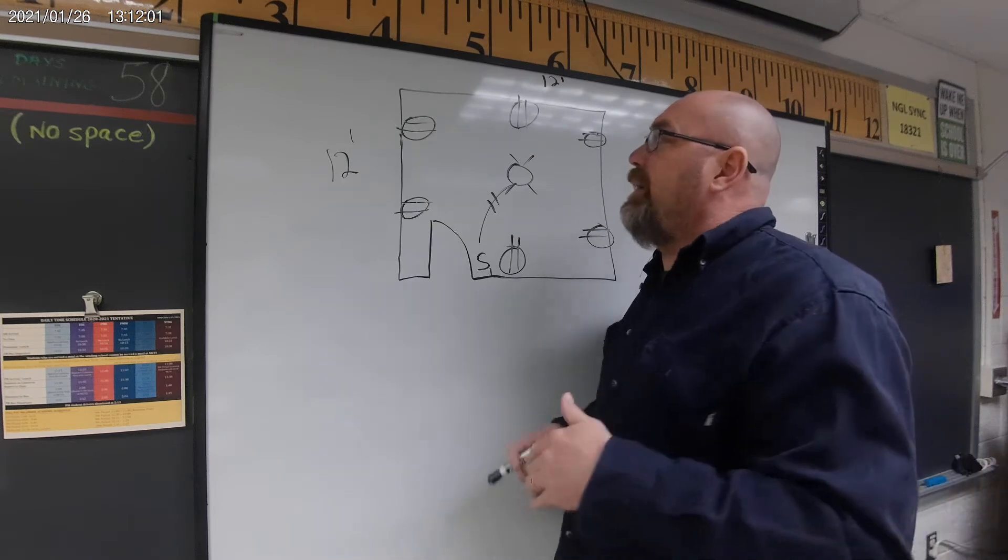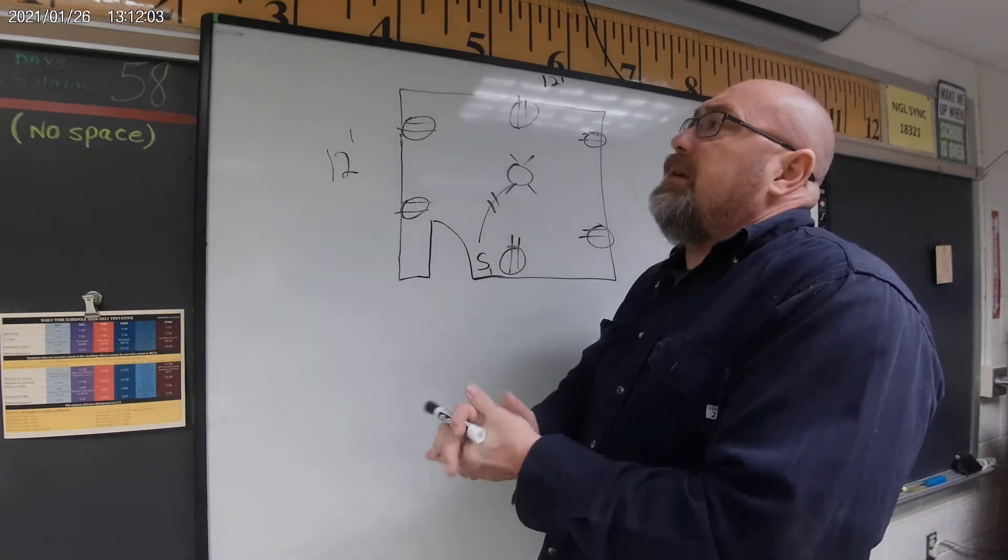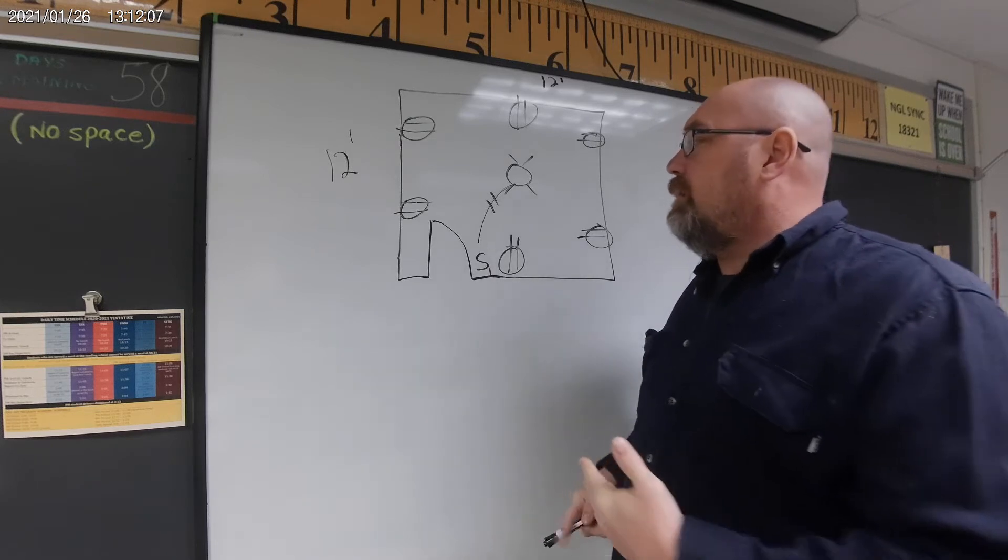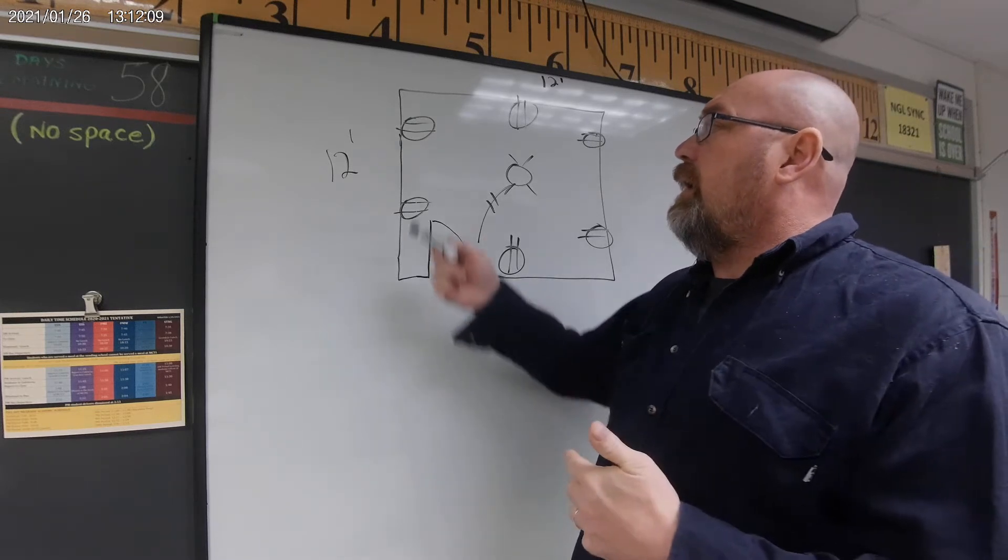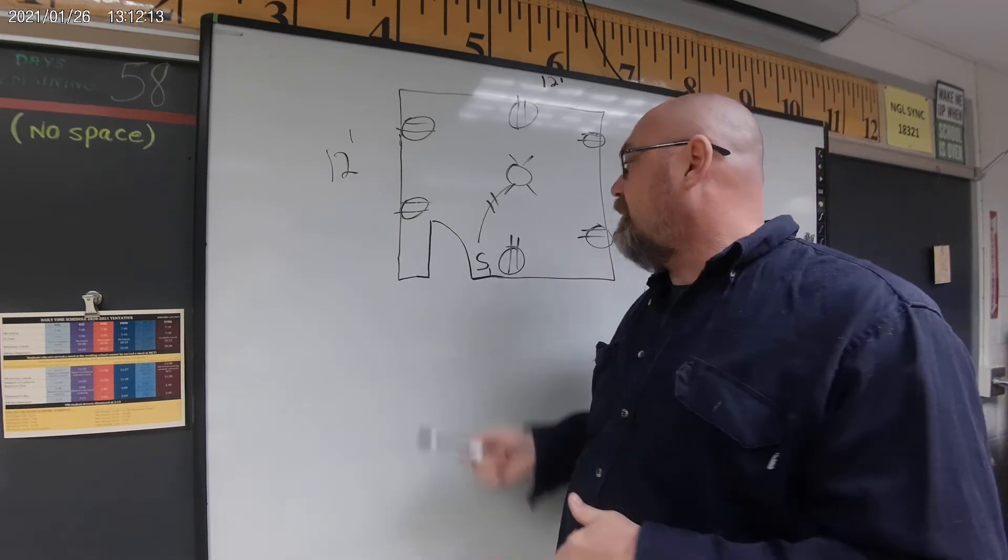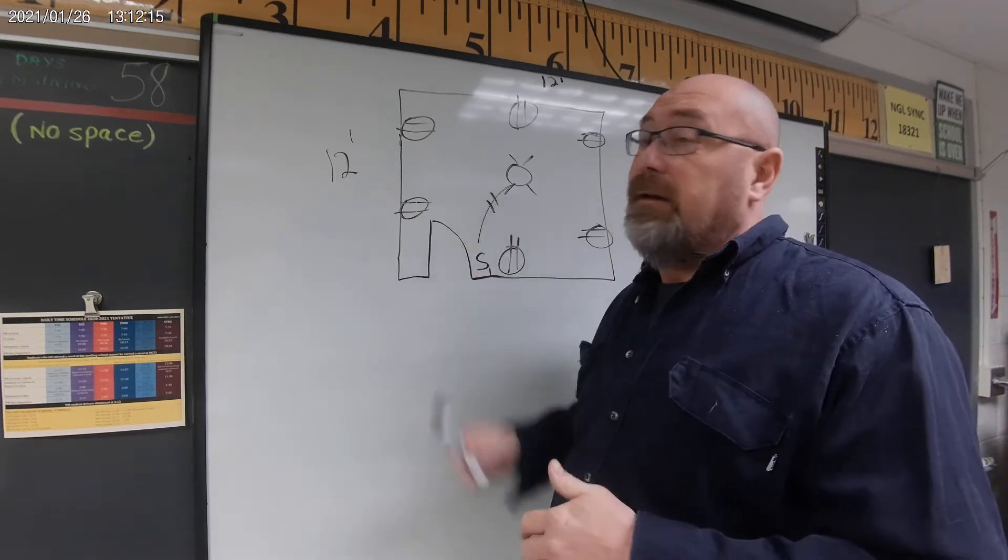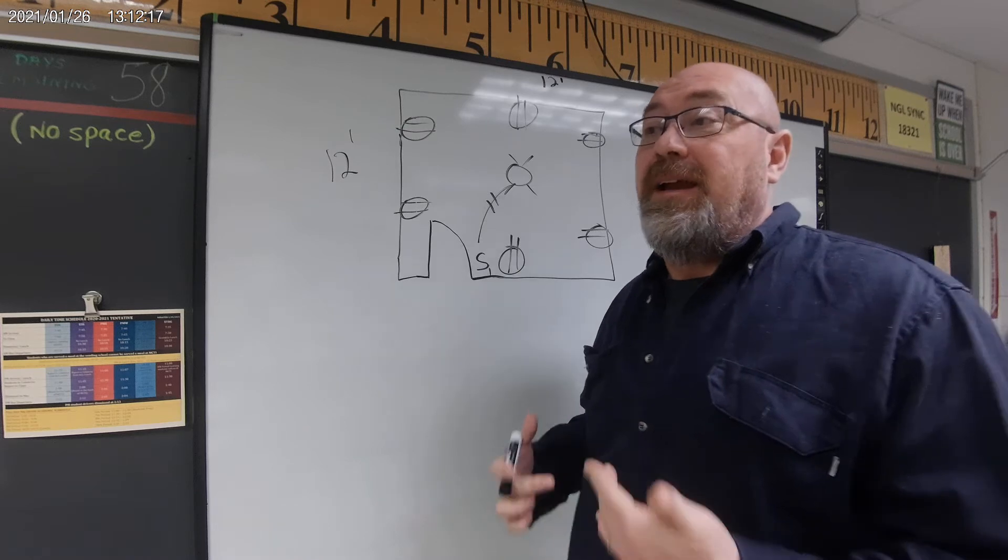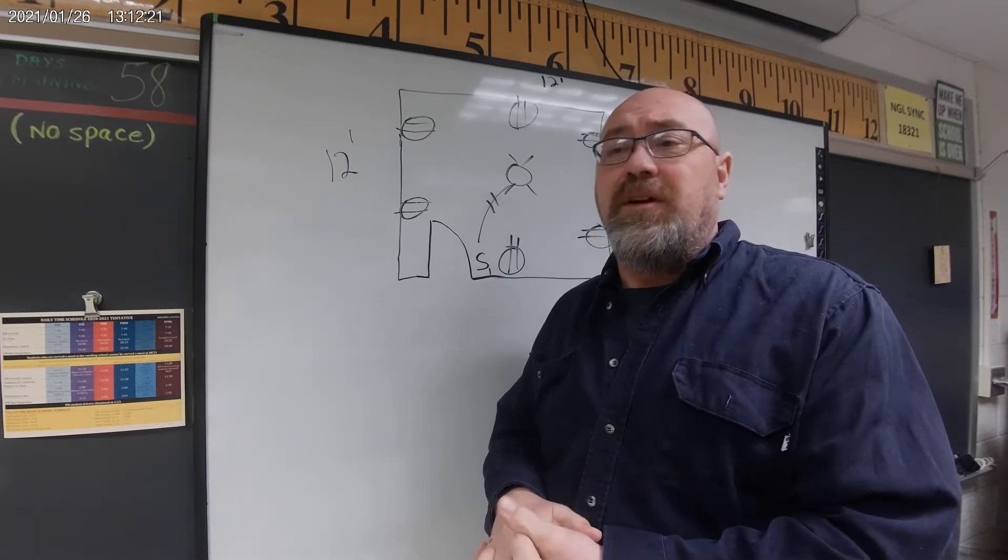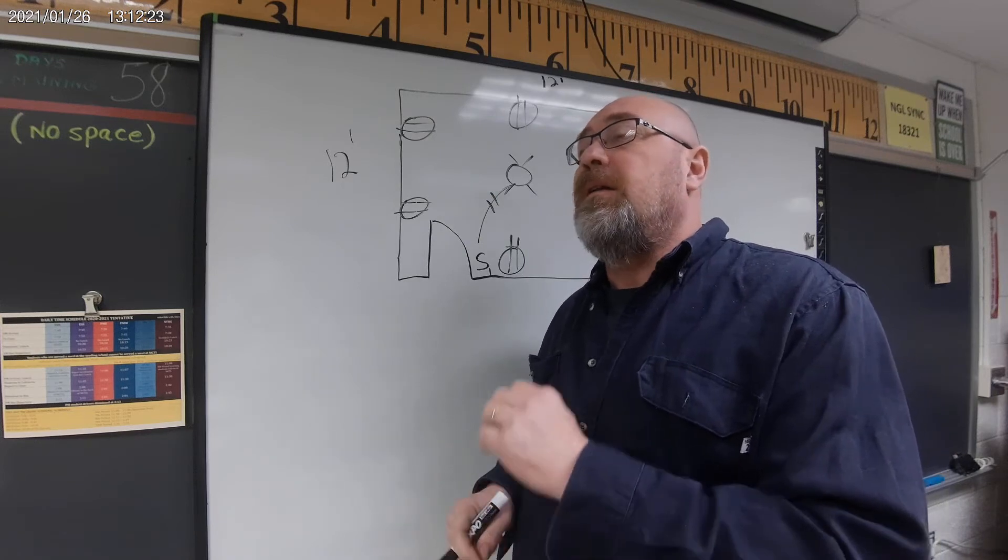Today I'm going to explain how we determine the size of a circuit. Looking at this drawing, I have one, two, three, four, five, six outlets, a switch, and a light—that's eight devices. The code states on a 15 amp circuit, it is preferred that we do not go more than eight devices per circuit.